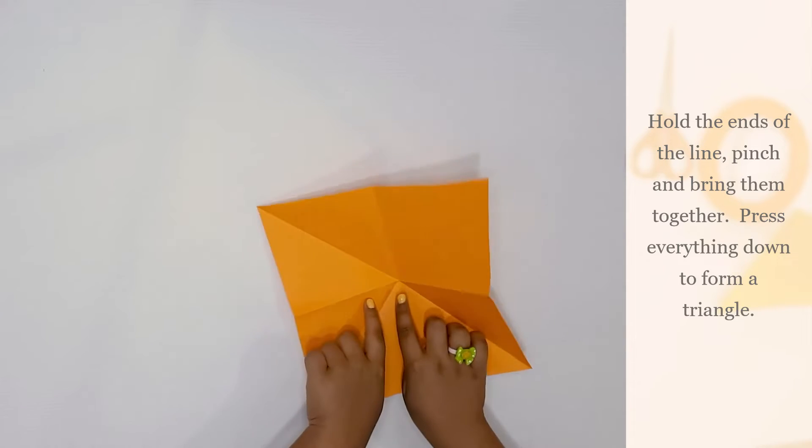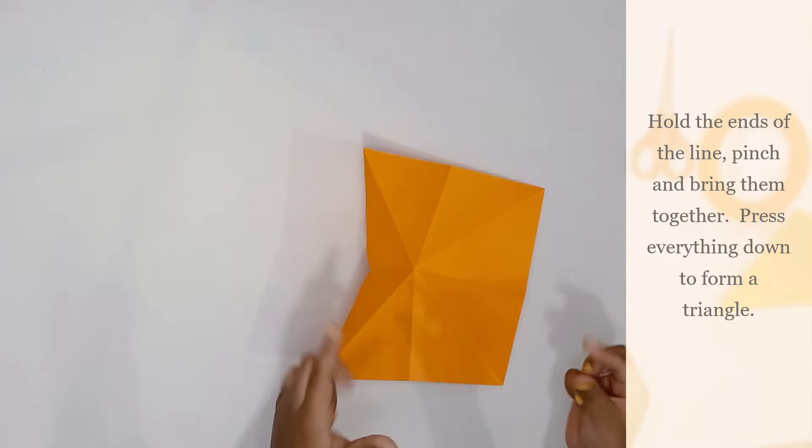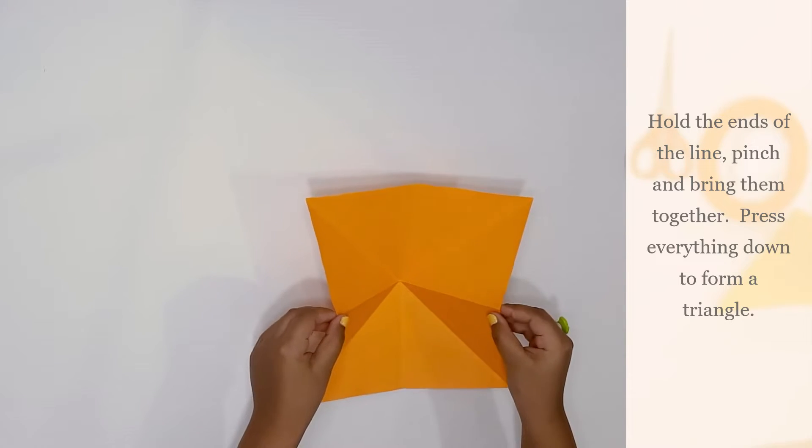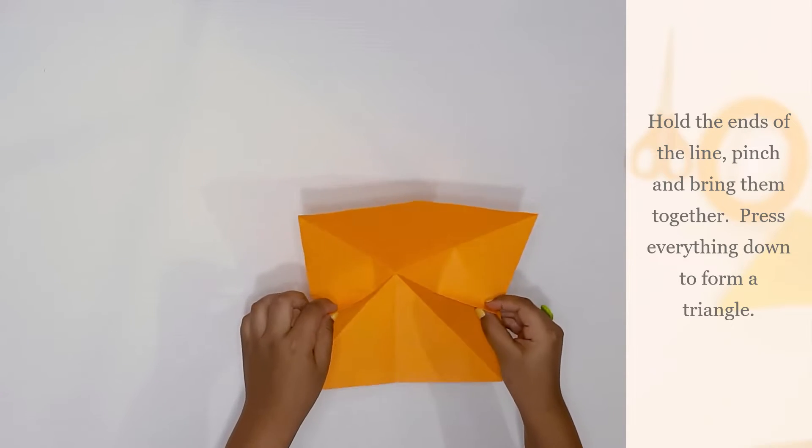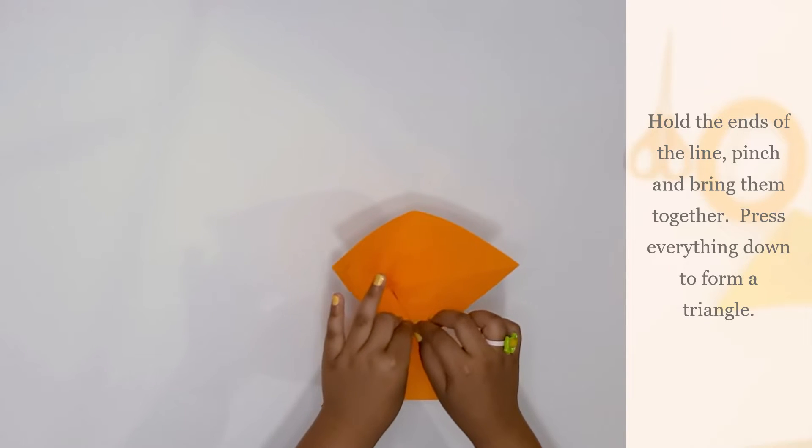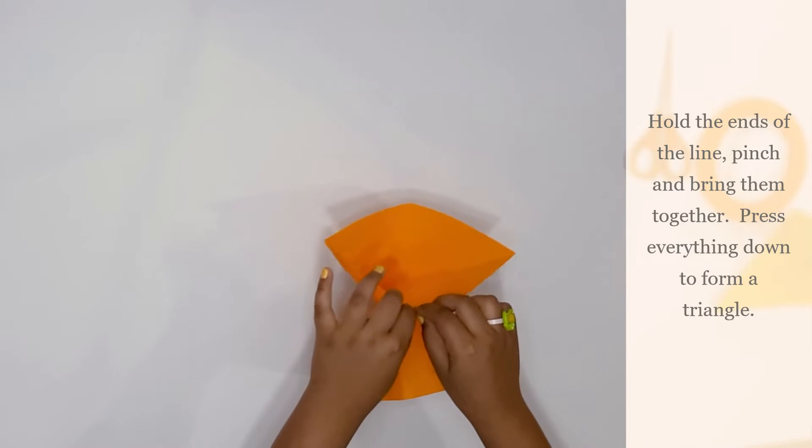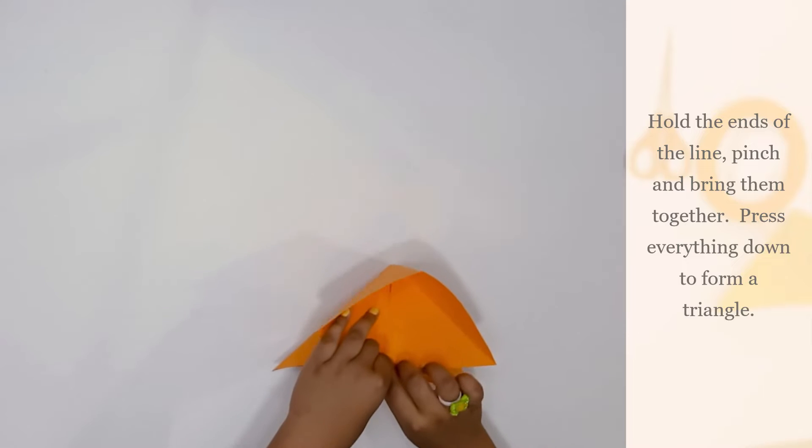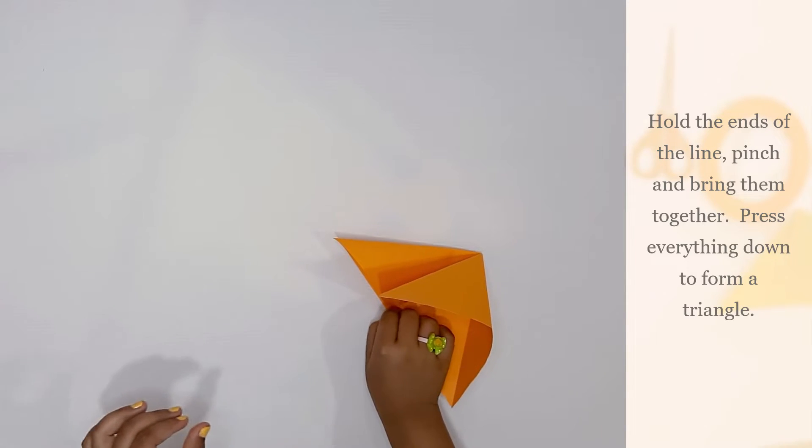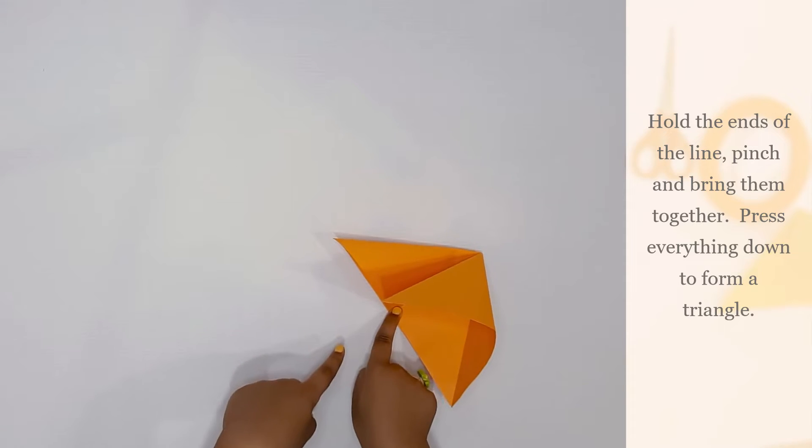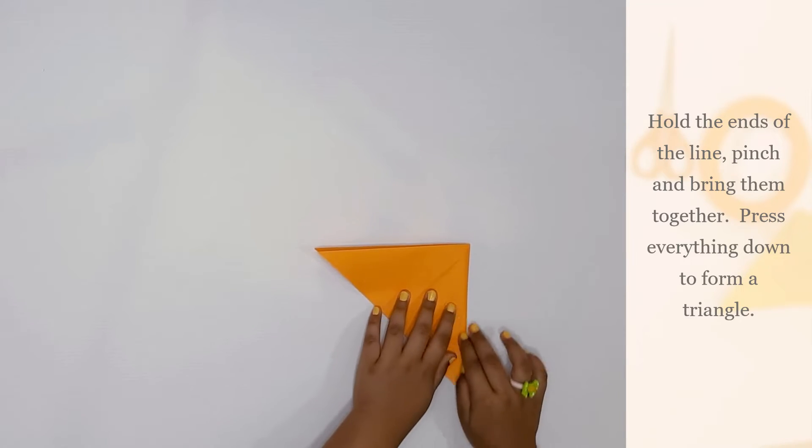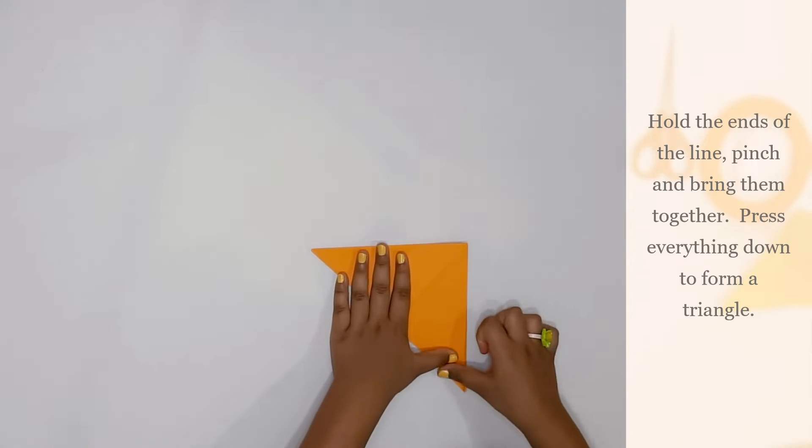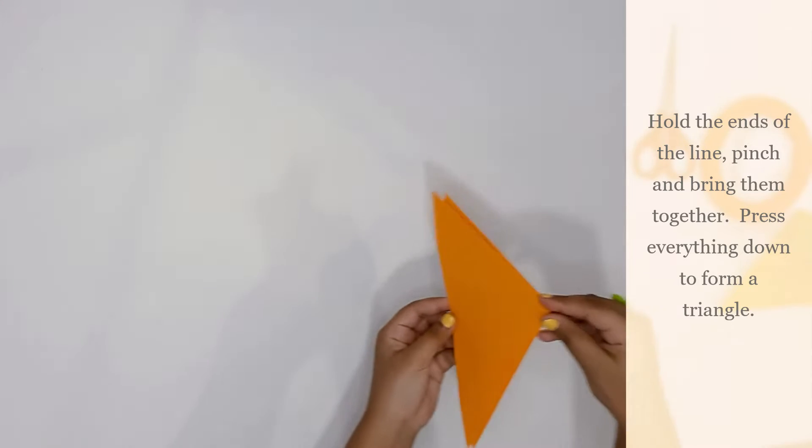Now we just made this line. Now hold the ends of the lines and then pinch. I am showing you again, hold the ends of the lines and then pinch it. Now bring them together. Now let them sleep. Now hold it with one finger tight. Press everything down. Now we get a triangle.